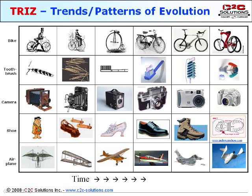For example, he looked at the original patent for a bicycle in the late 1700s and studied how it evolved into today's bikes. He also looked at the evolution of toothbrushes, cameras, shoes, airplanes, and thousands of other products. He found that there are certain patterns or trends that are common in the evolution of products that are independent of industry, technical discipline, or origin.